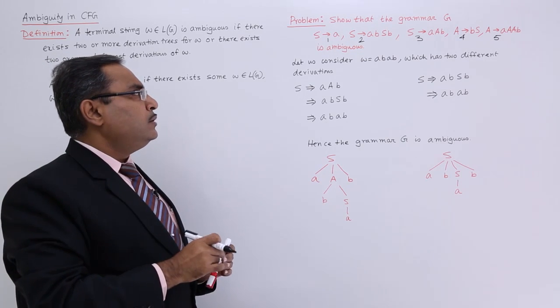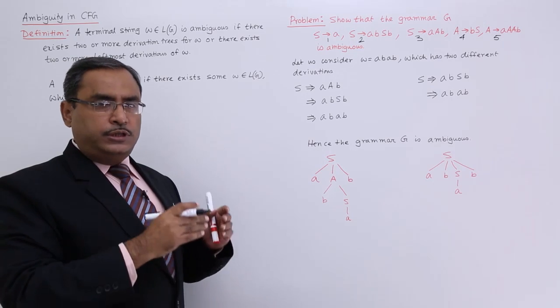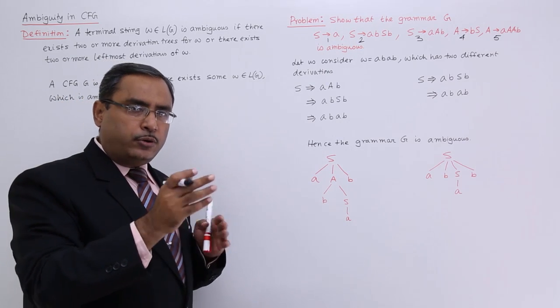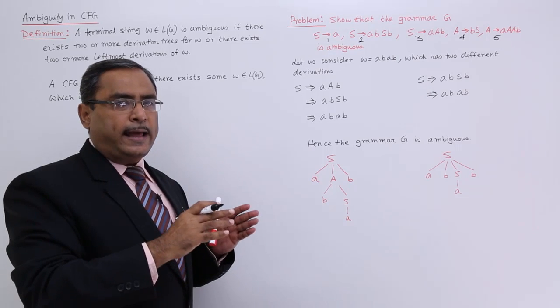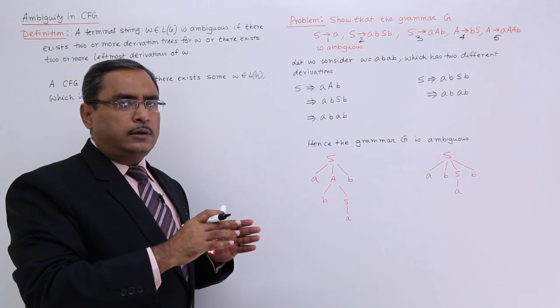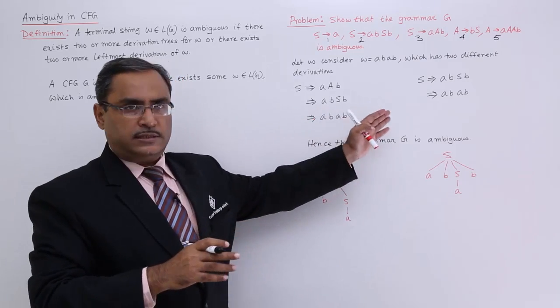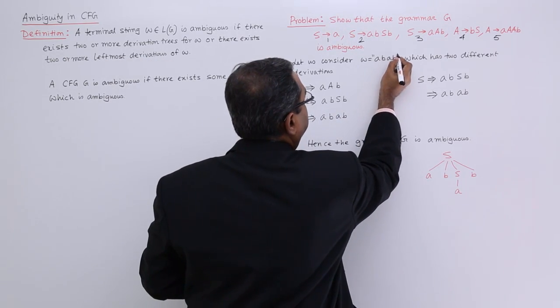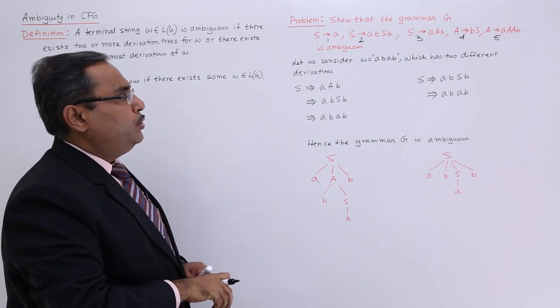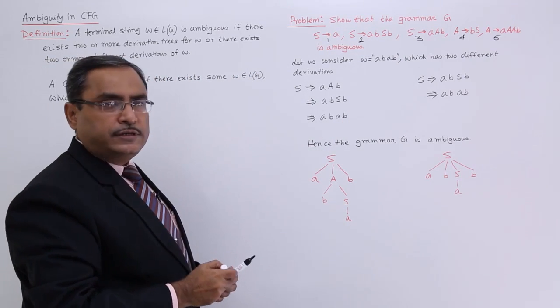Let us consider one w = abab. So this w has to be considered from your end. You should have to find one w for which you can have more than one type of derivation trees or derivations. I have taken the string abab which has two different derivations, let us see.